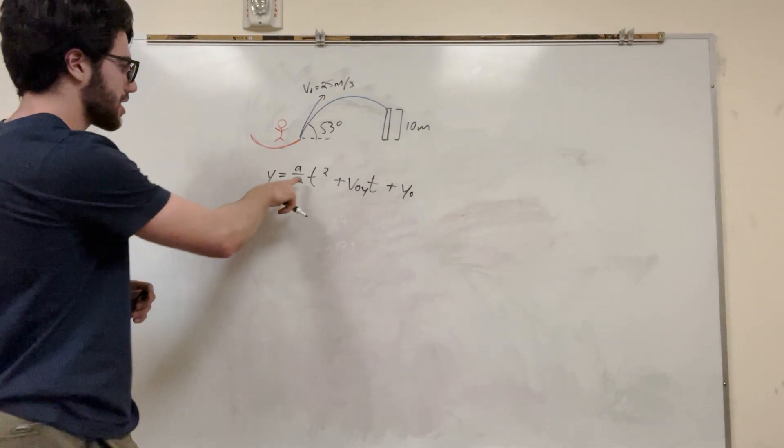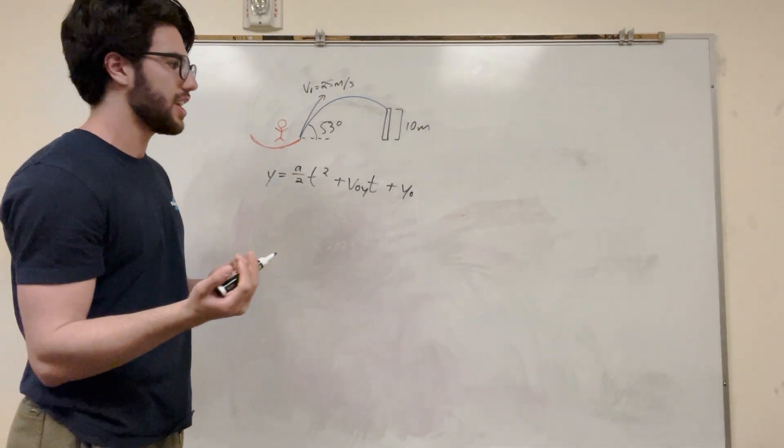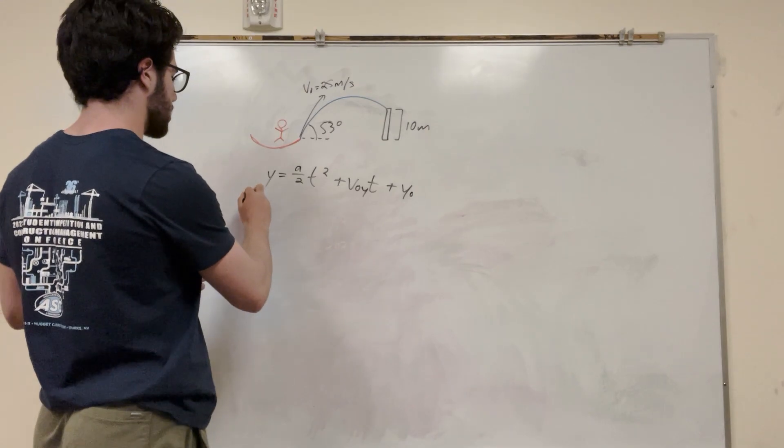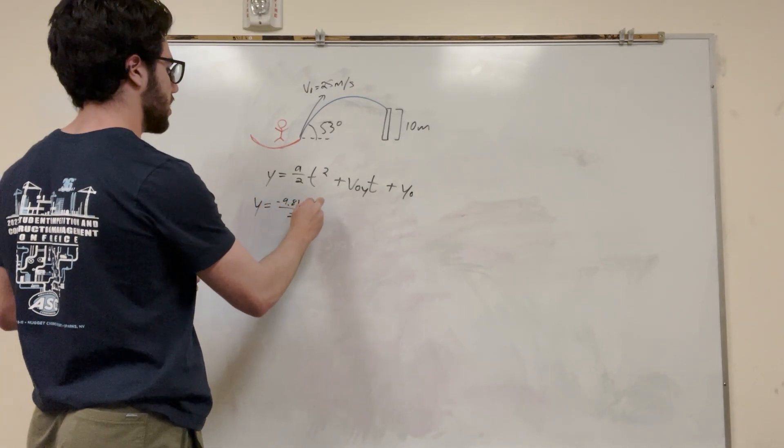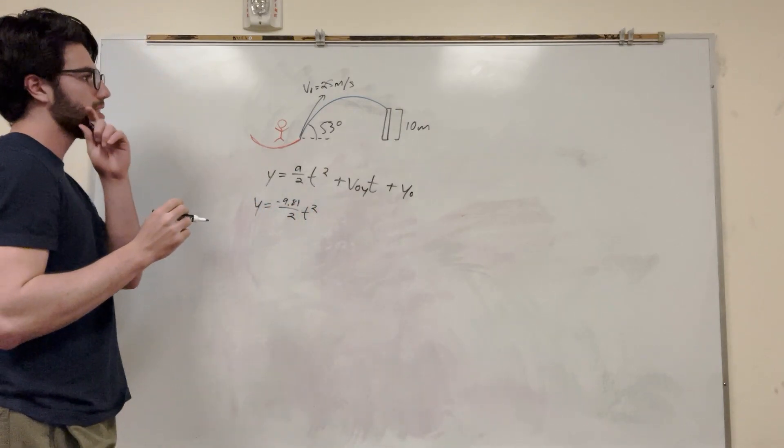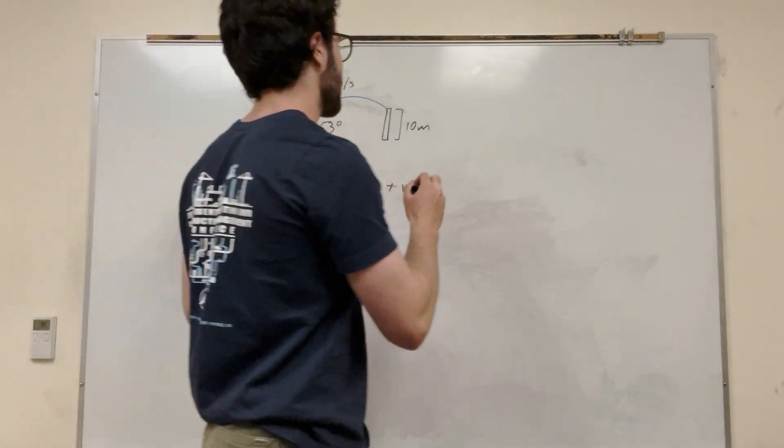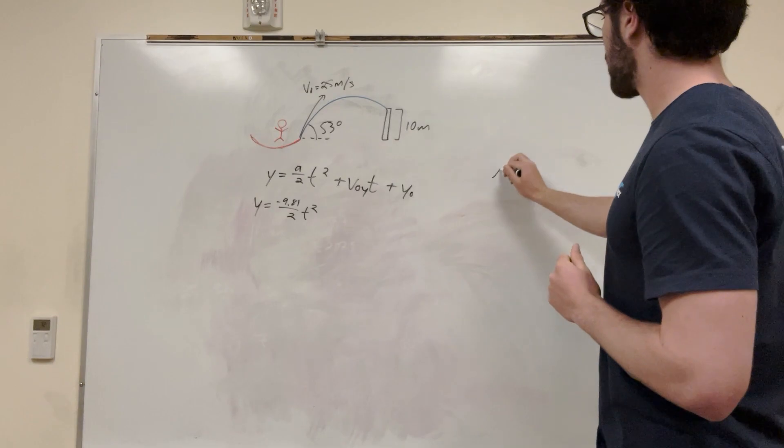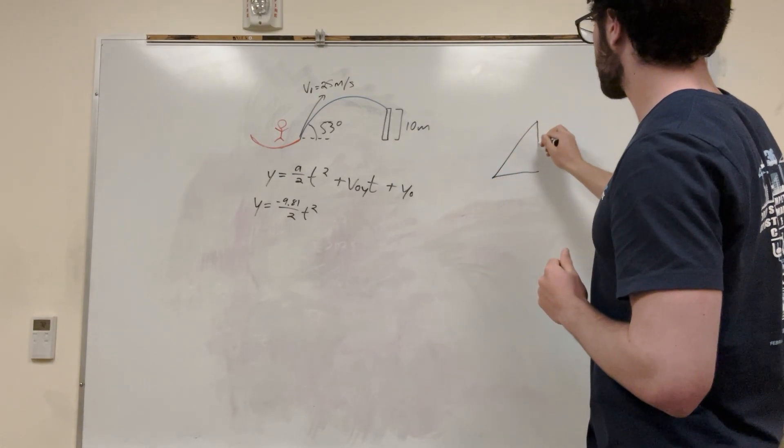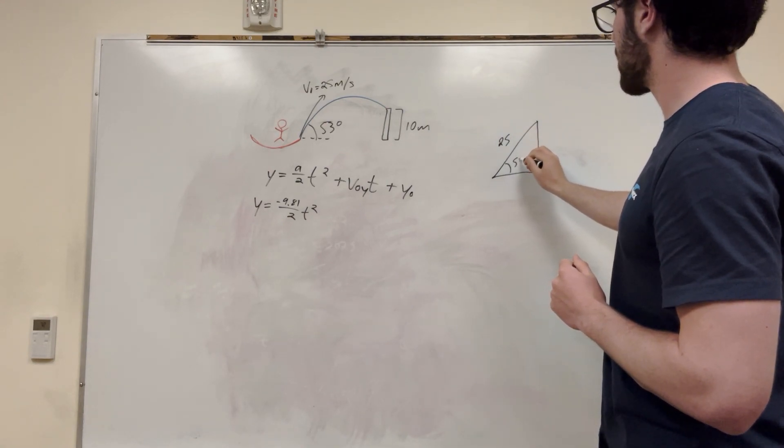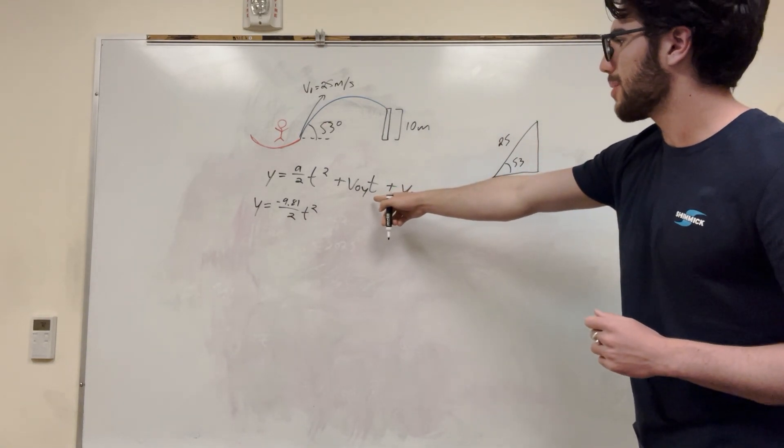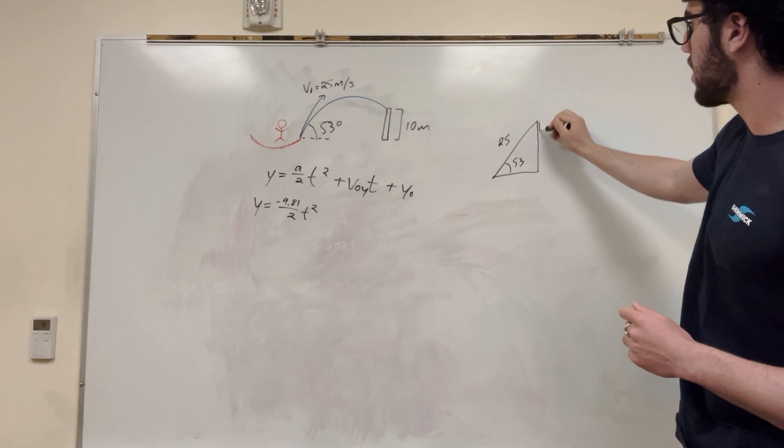So yeah, let's go ahead and expand this out. Acceleration in the y direction, that's going to be gravity, negative 9.81. So y is equal to negative 9.81 divided by 2, t squared. Now v-naught in the y direction, right? Well, let's draw a little triangle, always useful. So here's what our water looks like. So this is 25, and this is an angle that's 53, right? And we're just trying to find what's its initial velocity in the y direction, that's what this one is here.